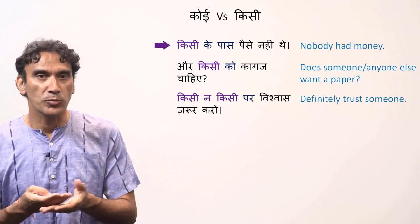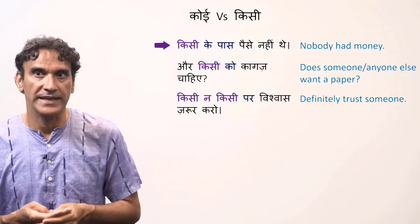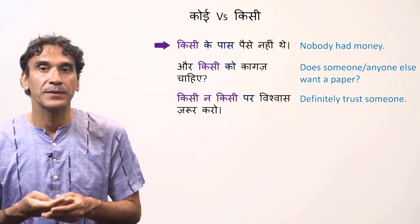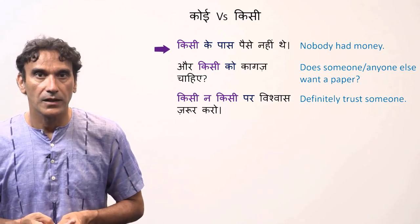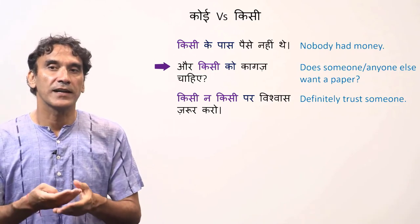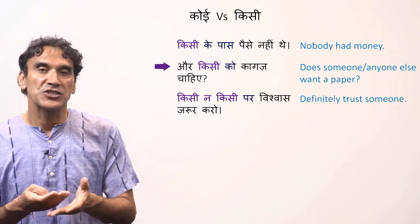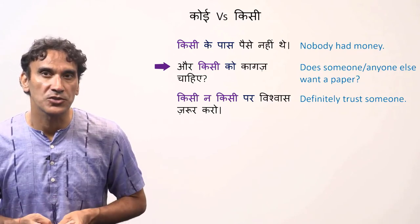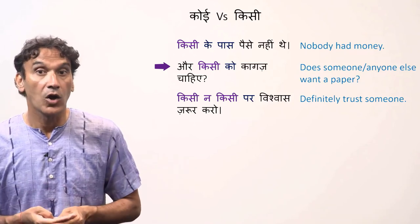So koi nahi is nobody. And when there is a postposition, let's say ke paas, it will become kisi ke paas. Kisi ke paas paise nahi the. Aur kisi ko kaagaz chahiye — Does anyone else want a paper? We know that chahiye demands that the subject takes the postposition ko. That's why it is kisi ko chahiye.